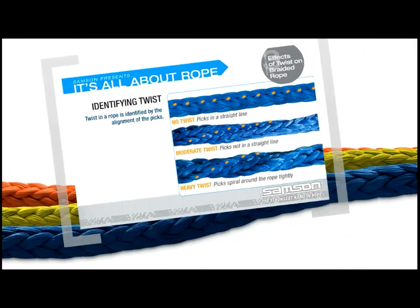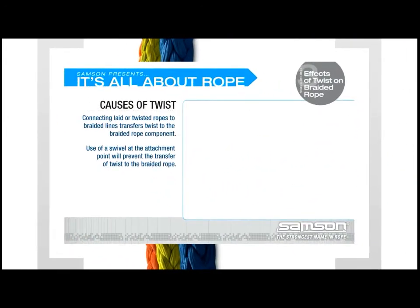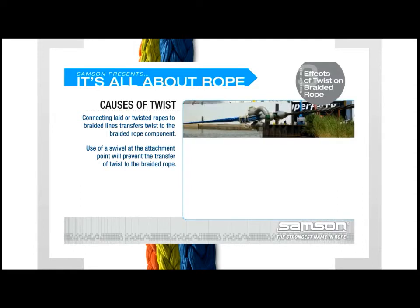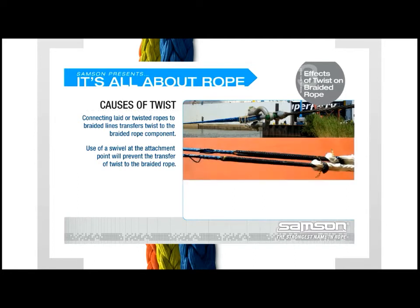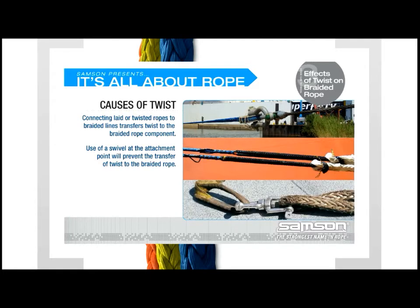Although a braided rope will not twist on its own under load like a laid rope, there are various ways a braided rope can become twisted — for example, when it is attached to a laid synthetic or wire rope. As a laid rope is loaded, it unwinds, transferring twist to the braided rope component. To prevent twist, do not connect a braided rope to a laid rope or wire rope. In towing operations, use a swivel to connect the messenger line to the main line or pendant to aid in reducing twist in the pendant and main line.